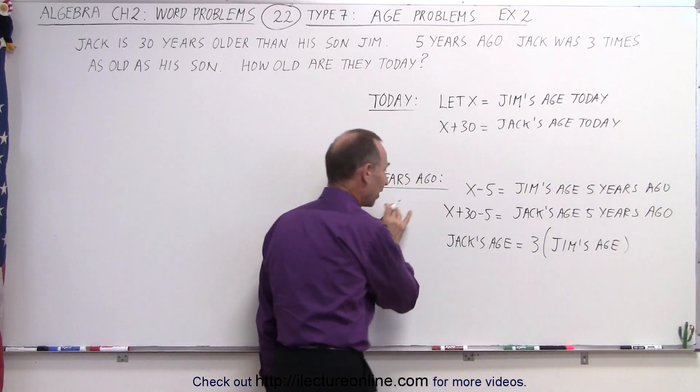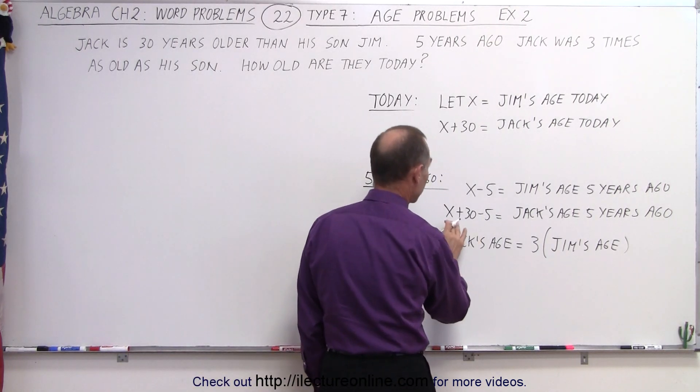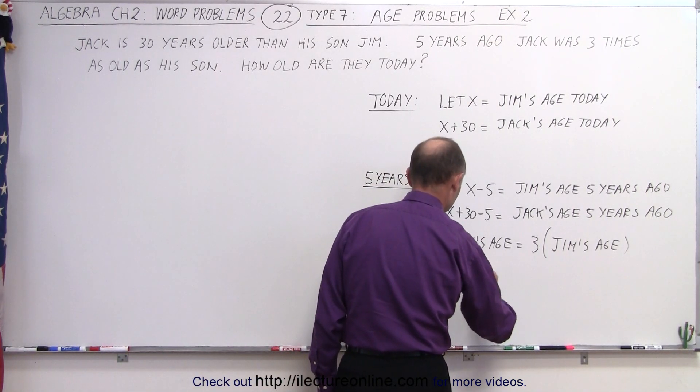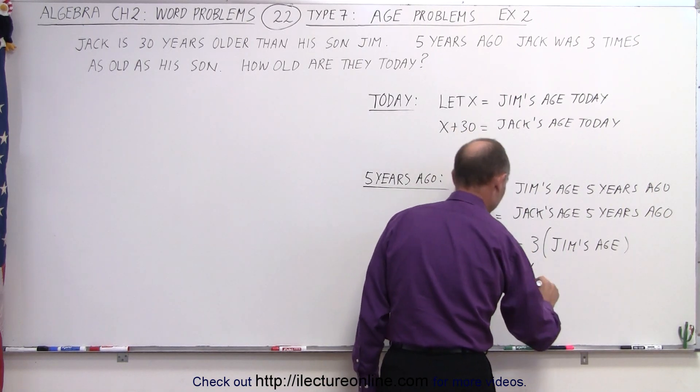...equals three times Jim's age. And of course, that was five years ago, so we need to use their ages from five years ago. Jack's age five years ago would be x plus 25, which then is equal to three times Jim's age, which will be x minus five.